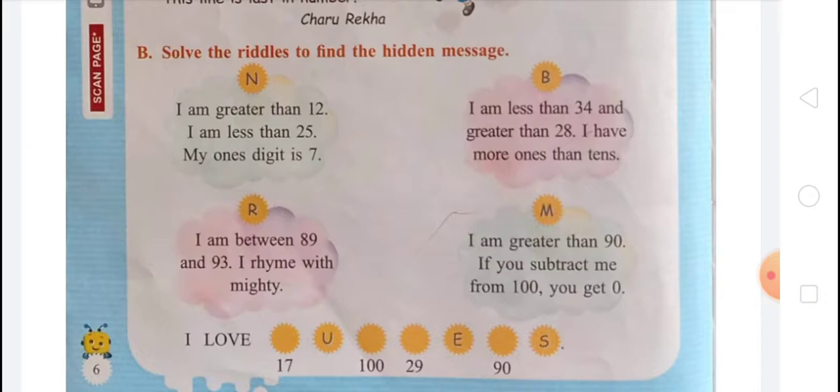After that, riddle M: I am less than 34 and greater than 28. I have more ones than tens. The numbers that are greater than 28 and less than 34 are 29, 30, 31, 32, and 33. The ones digit is more than the tens digit — that means it is 29, because in 29 the ones is 9 and the tens is 2, so 9 is greater than 2.